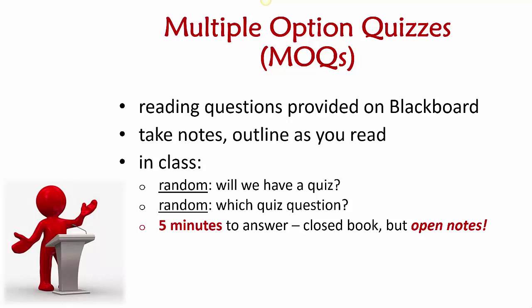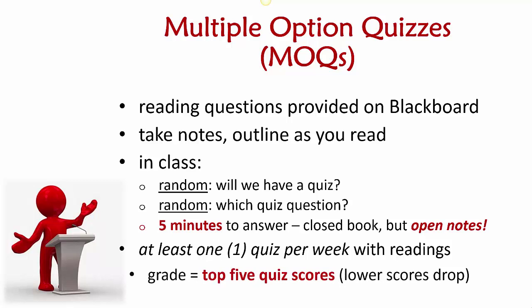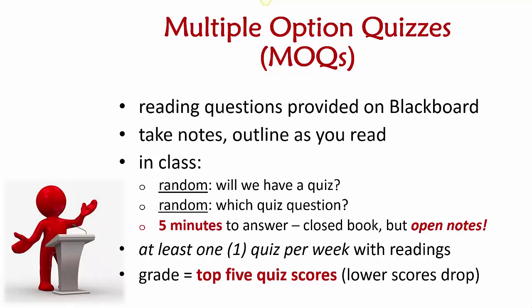We're going to have at least one quiz per week every time we have readings, and the grade for this part of participation will be the top five quiz scores. Occasionally you may miss a quiz because you miss class, or you may bomb a quiz because you didn't do the reading — it happens to everybody. You'll get graded on your top five scores, and we're going to have at least several more than five quizzes, so low scores will drop.